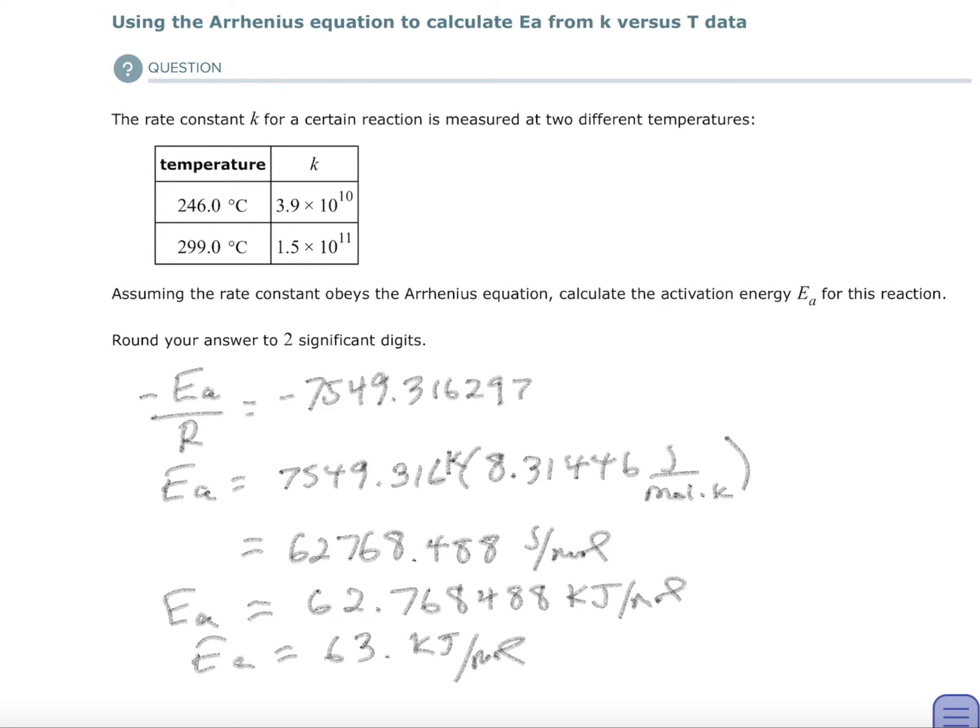They want two significant digits. So I would write down 63 point. And then whatever they're asking for, if they ask for the units or not, I'm not sure. So 63 point. So I would call this a hard question. You might even have to do this example a couple times before you try it. And then I hope you do well.